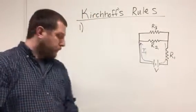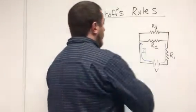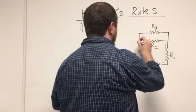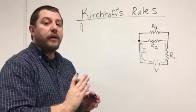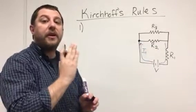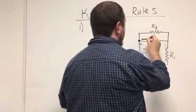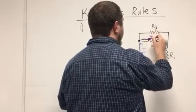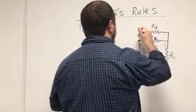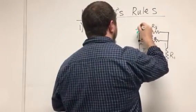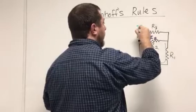Now what happens when the current hits this junction? Some of the current is going to be forced to go through the middle branch and some upward. We're going to have some current flow this way, we'll call that I2, and some of the current must flow this way, we'll call it I3. So I2 is going to go through this branch and I3 will continue through this branch.